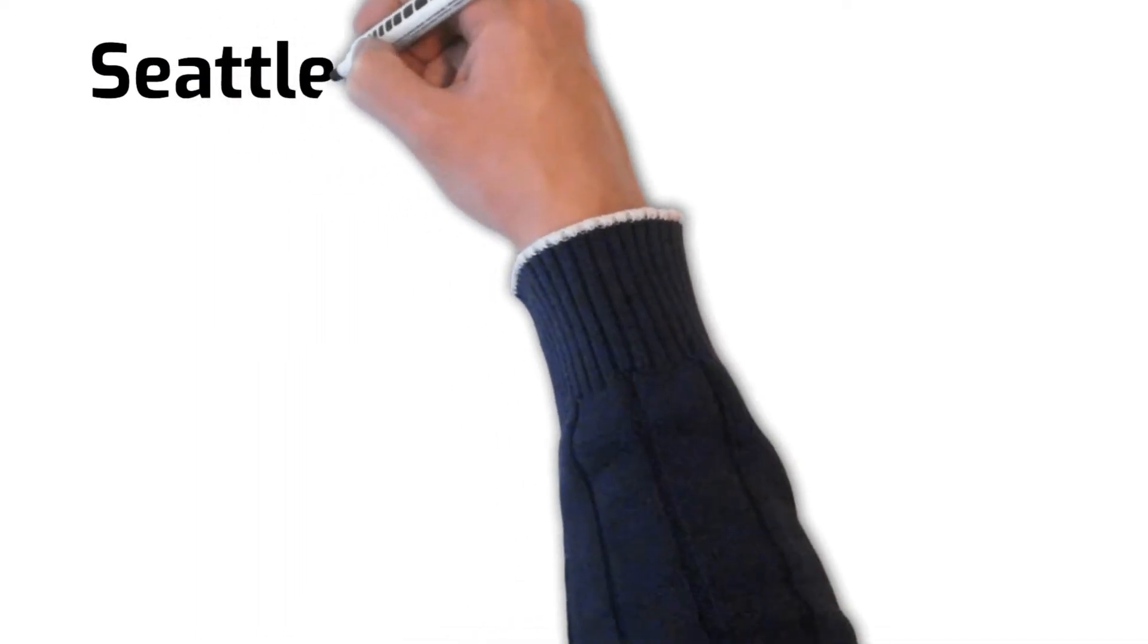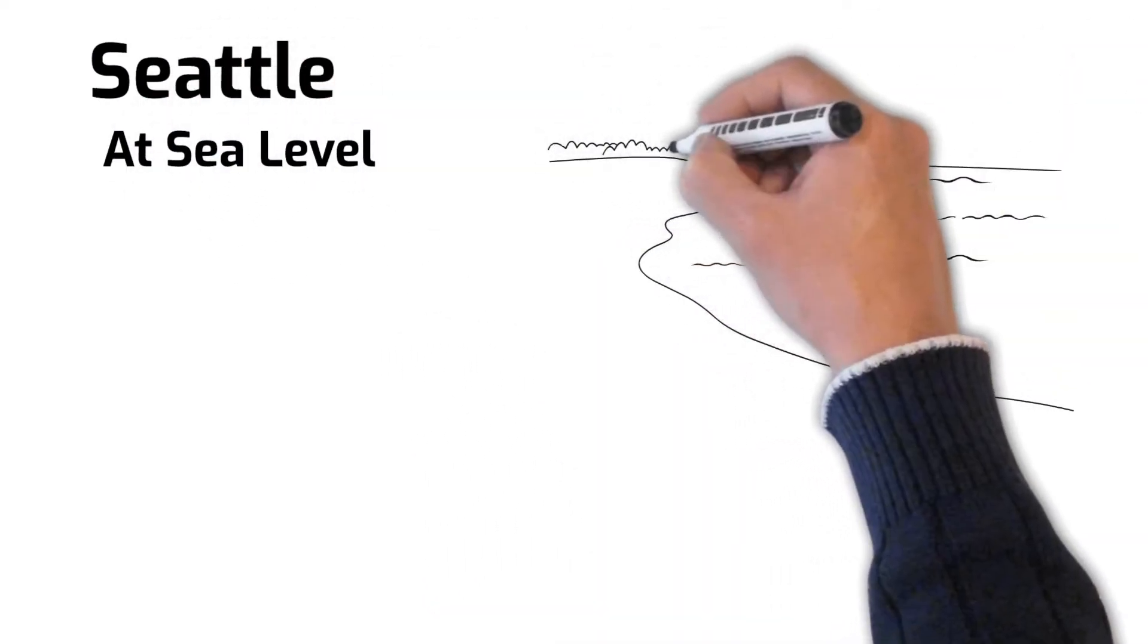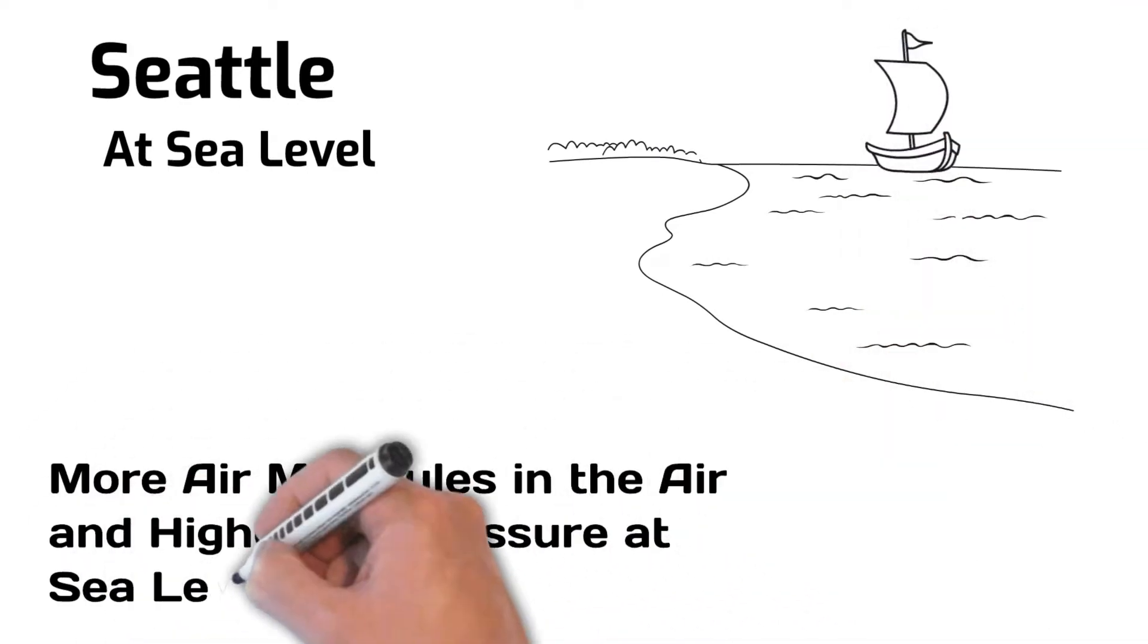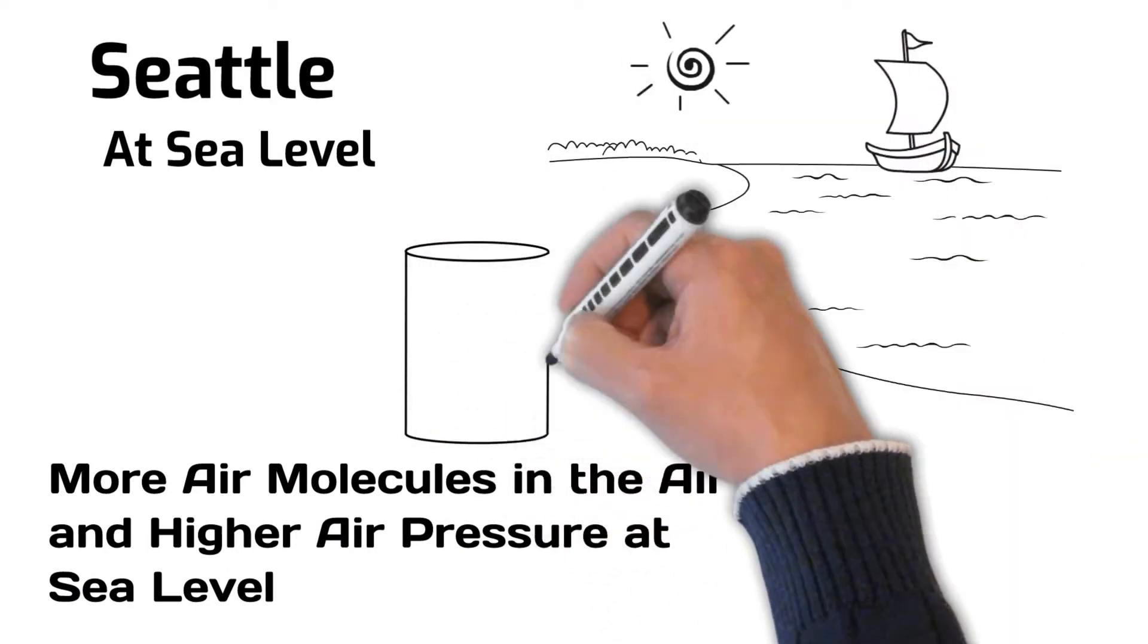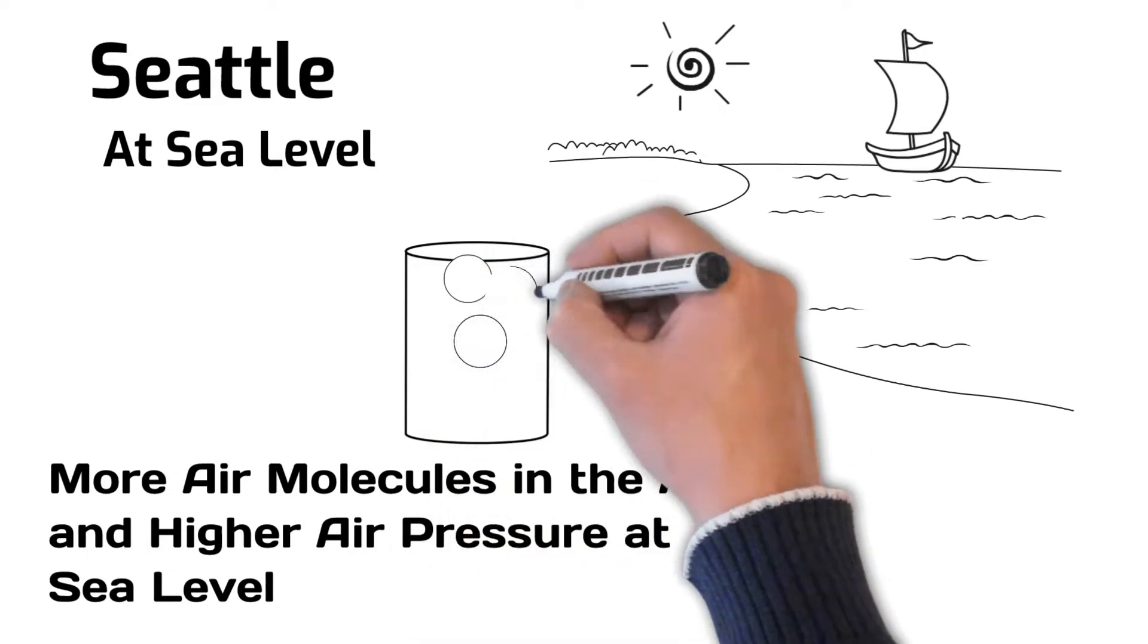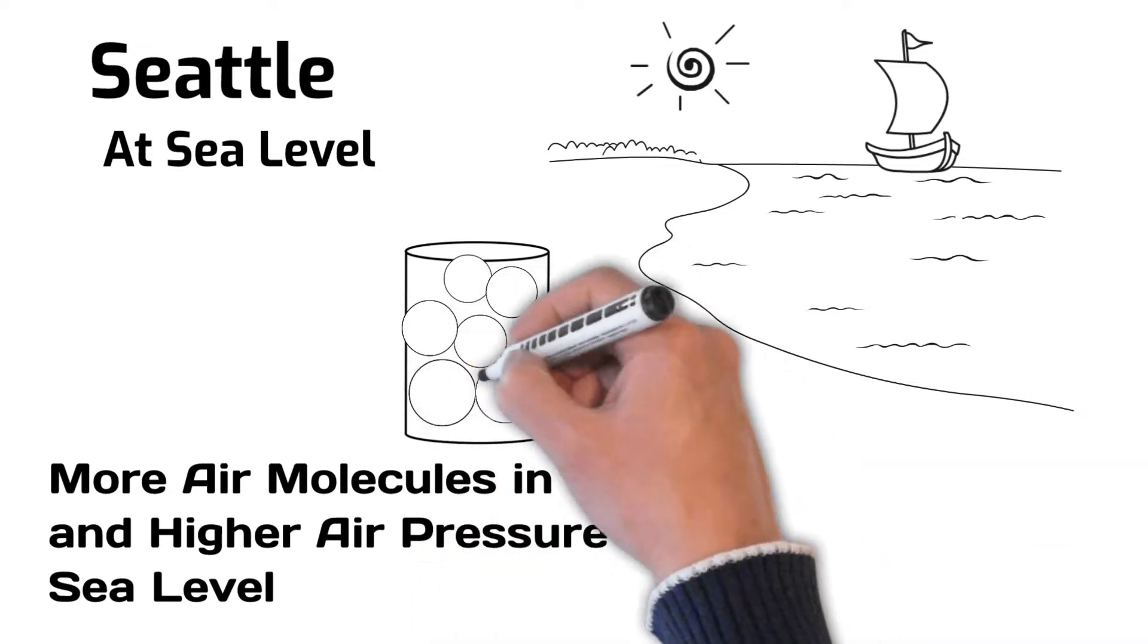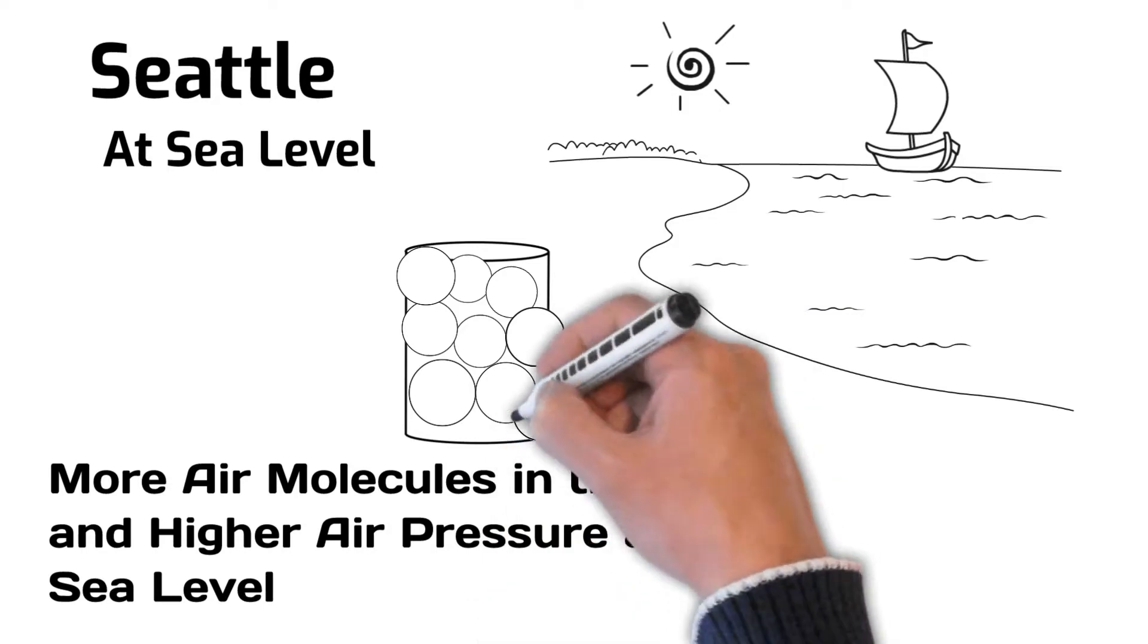Let's assume we were in Seattle, which is at sea level. At sea level, the air is denser and there is higher air pressure. If we had a cylinder and were able to visually see air molecules in the cylinder, there would be more air molecules at sea level and the molecules would be densely packed together as shown. Thus, the aircraft would perform better at sea level assuming standard temperature.